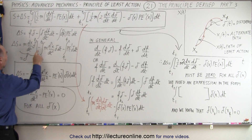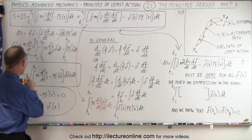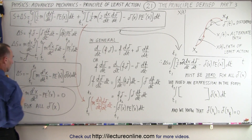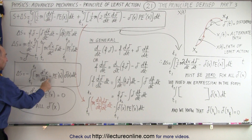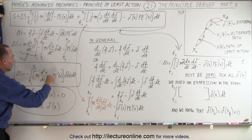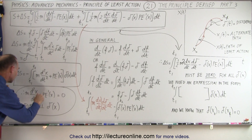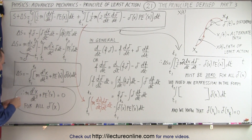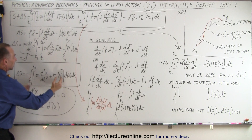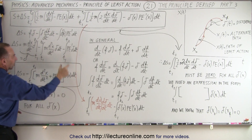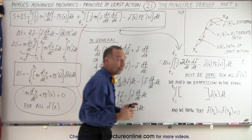Our delta S then becomes two integrals — minus this one and minus this one. Being careful with the signs, the minus and minus means we need to handle them correctly so that the result is consistent. Combining the two integrals together and factoring out the delta function and dt, we now have delta S written exactly in the desired format: an integral of something times delta X times dt.